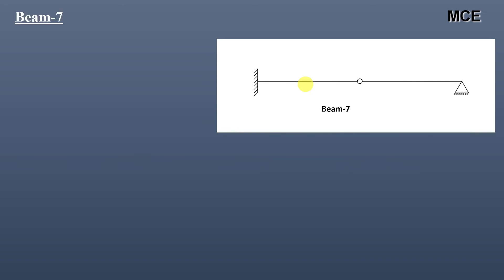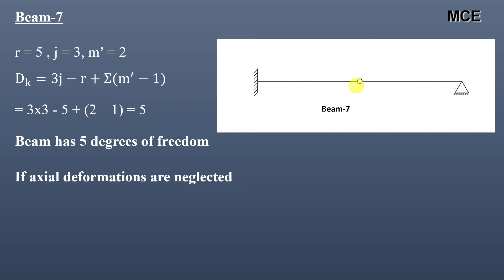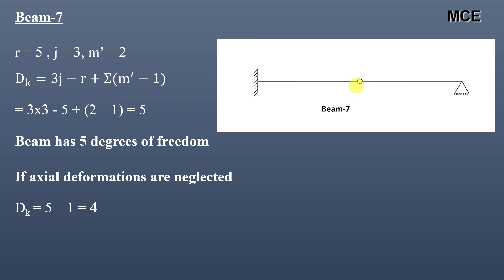For beam seven, there are five reactions, three joints, and one internal hinge, so m′ = 2. The value of dk = 5, meaning the beam has five degrees of freedom. There is one member in the beam, so if axial deformations are neglected, dk = 5 − 1 = 4.